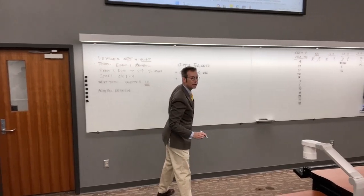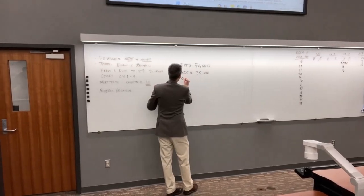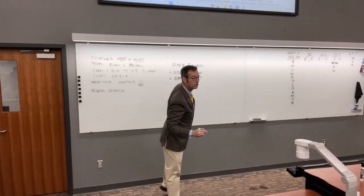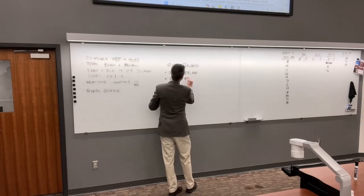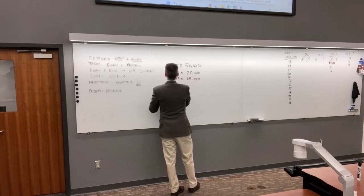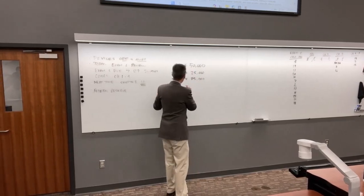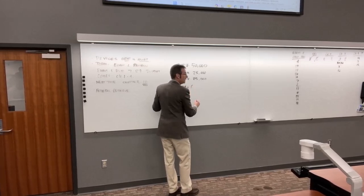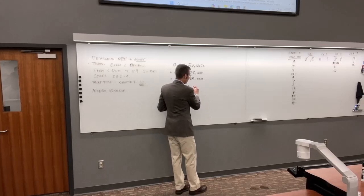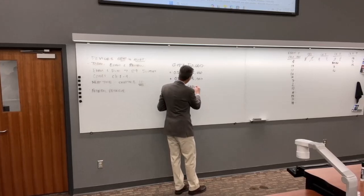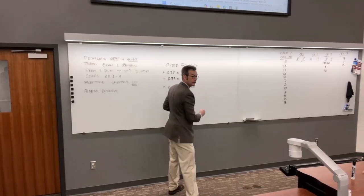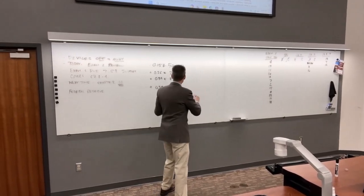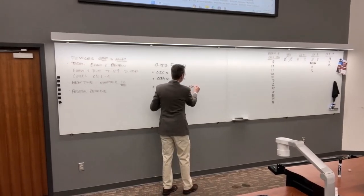What's the next tax bracket? It's 34%, and how much is in that bracket? $25,000. And then finally we have 0.39 — how much income do we have in that bracket? $225,000. We take our $325,000 pre-tax income and subtract $100,000, because that's the bottom of that bracket.